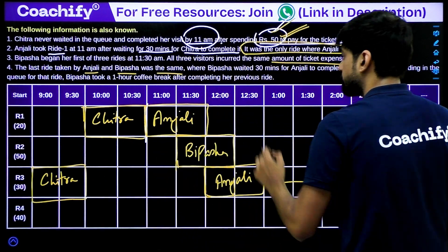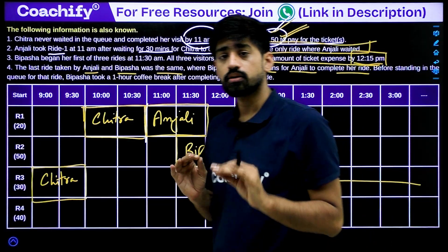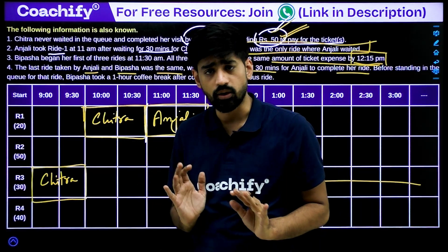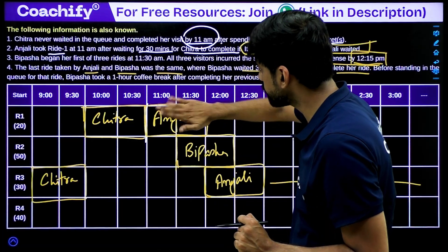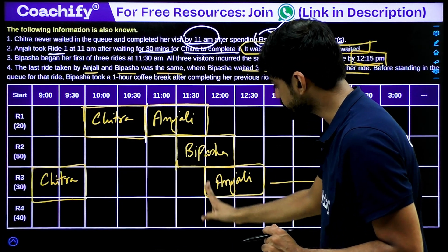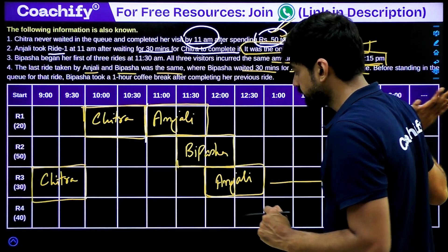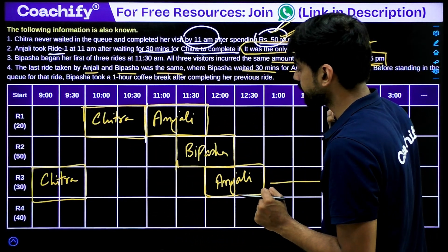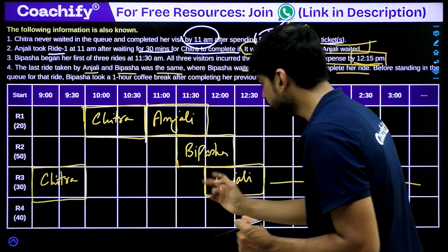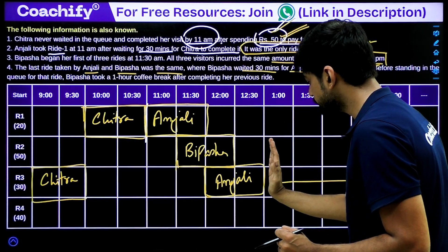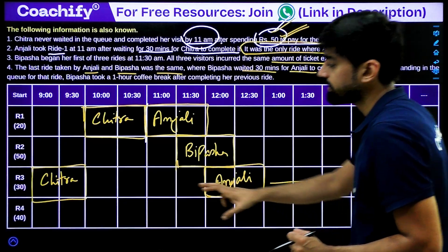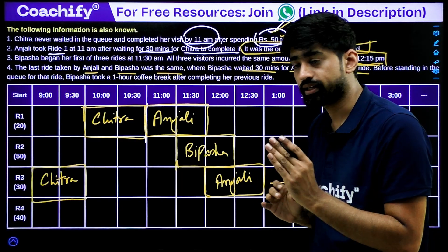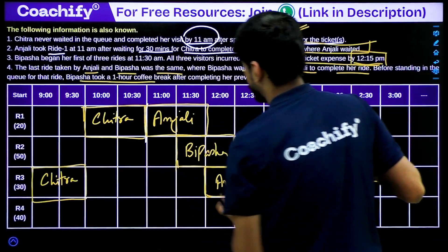The last clue: the last ride taken by Anjali and Bipasha was the same, where Bipasha waited 30 minutes for Anjali to complete her ride. Let's figure out which ride this could be. Ride 1 is not the last for Anjali since she continued to ride 3 afterward. Ride 2 is not feasible for Anjali due to the 50-rupee amount constraint at 12:15. Ride 3 is ruled out because its gate closes after 1 p.m. So the only remaining option is ride 4 — that is the last ride for both Anjali and Bipasha, with Bipasha waiting 30 minutes for Anjali.